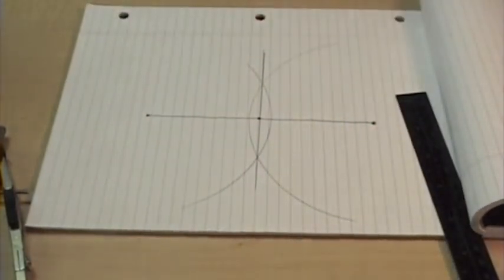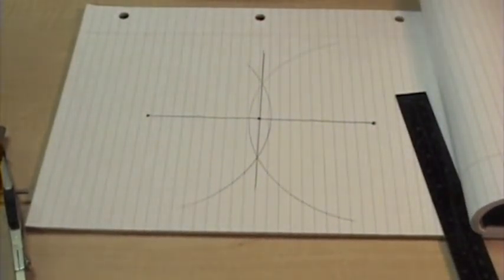So that's how we find the center or the bisection of a line, or how we construct it with a compass.